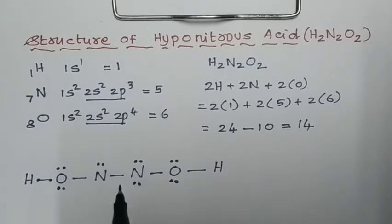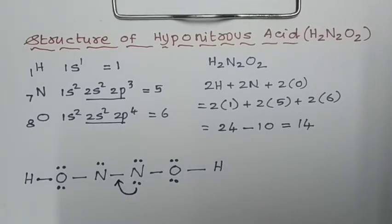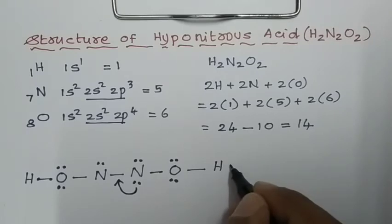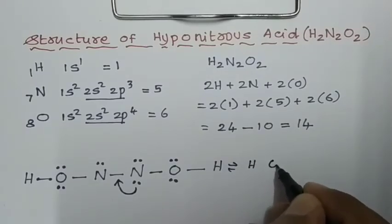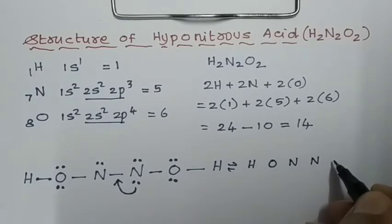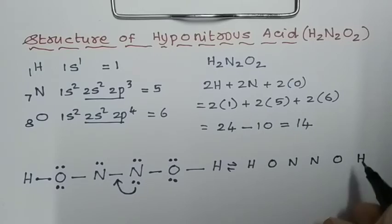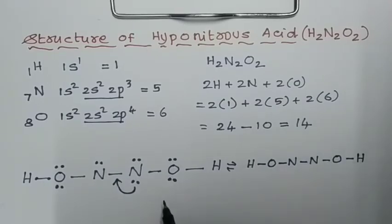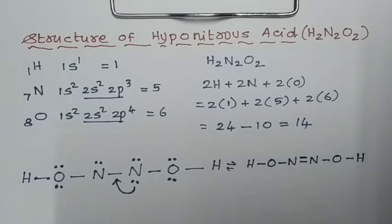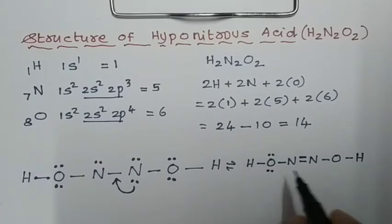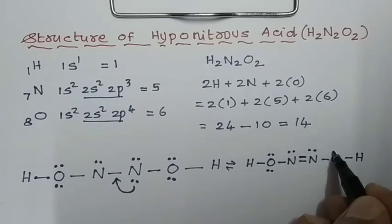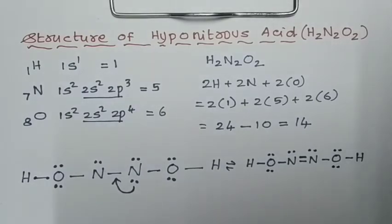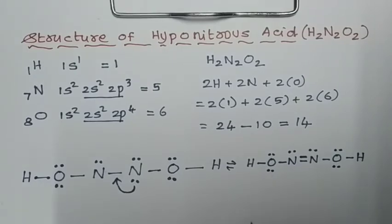To give nitrogen 8 electrons and satisfy the octet rule, one lone pair of electron on nitrogen is converted into a bond pair. This creates a double bond between the two nitrogen atoms. The final structure is: H–O–N=N–O–H. Each oxygen retains two lone pairs, and each nitrogen retains one lone pair. All atoms now achieve their octet.